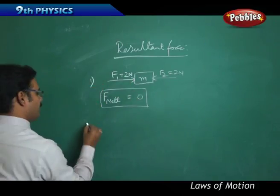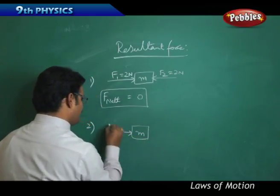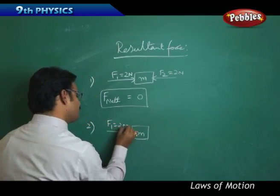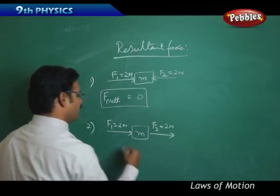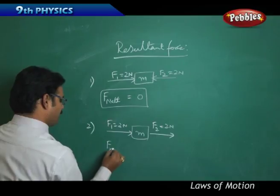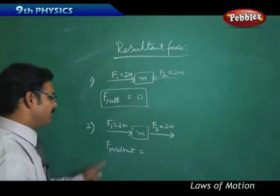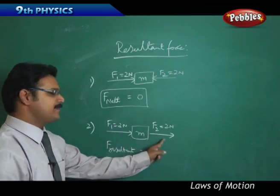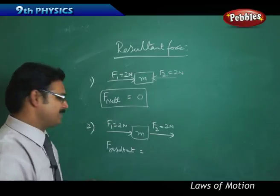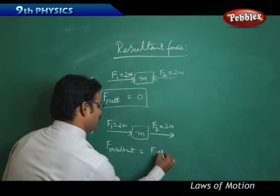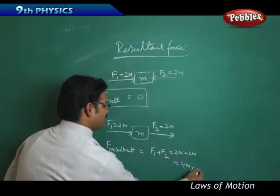Second example: take the same body of mass M, with F1 equal to two Newtons and F2 equal to two Newtons, but this time both forces act in the same direction. When two forces act in the same direction, you add them: F1 plus F2 equals two Newtons plus two Newtons, which is four Newtons.